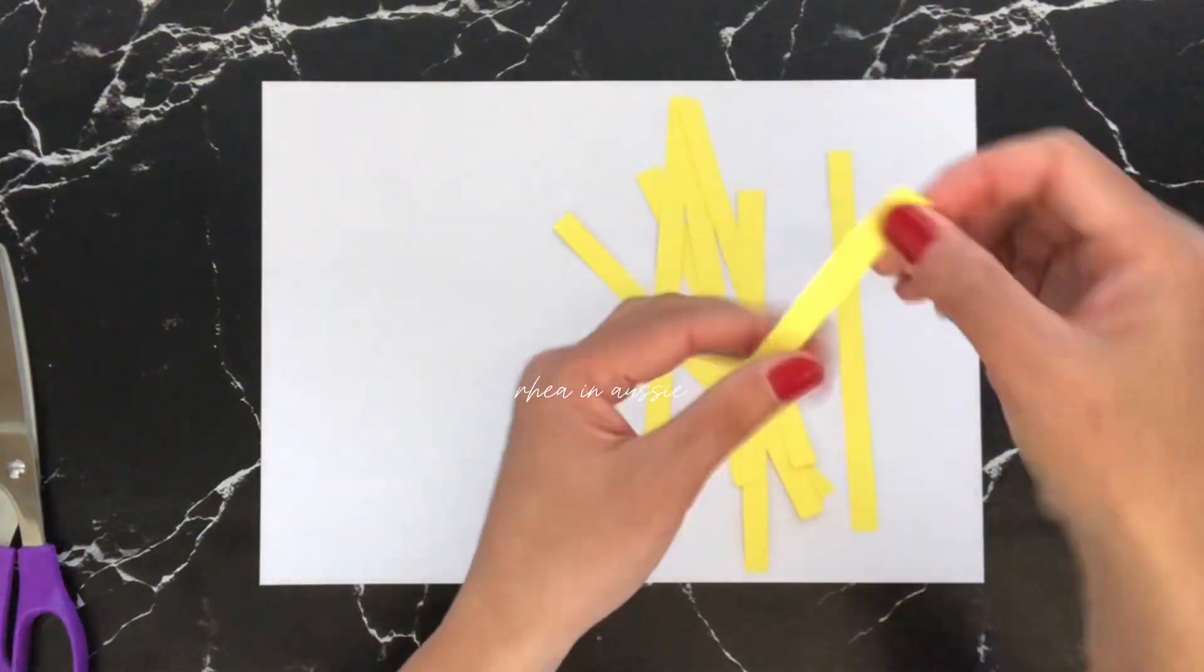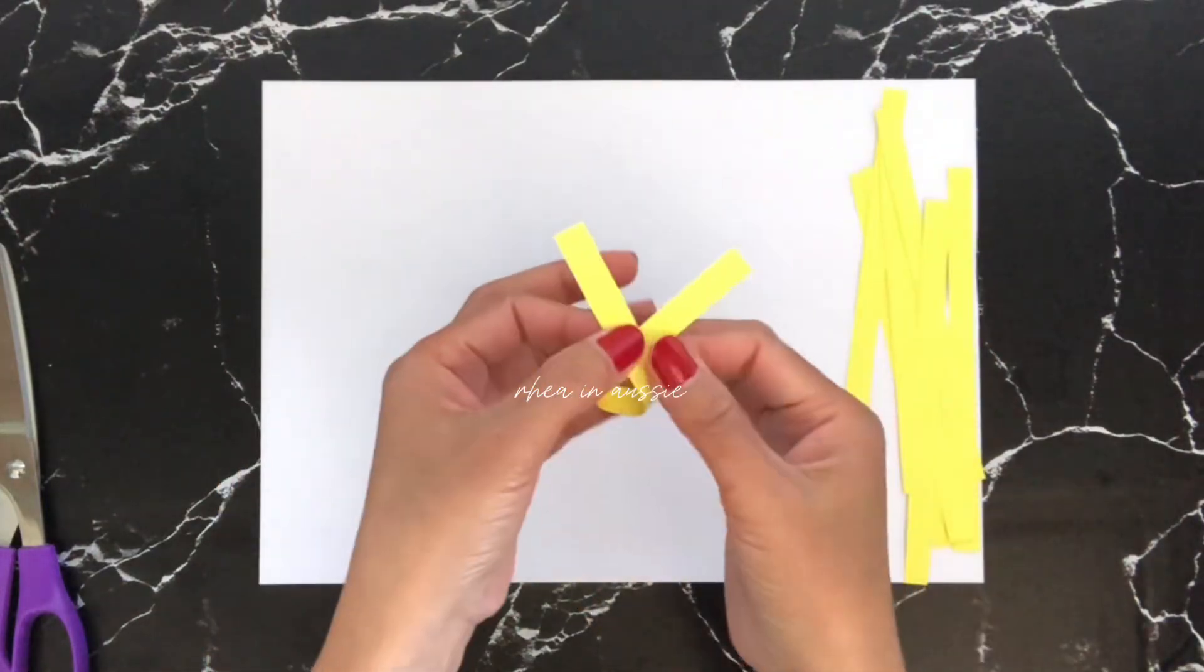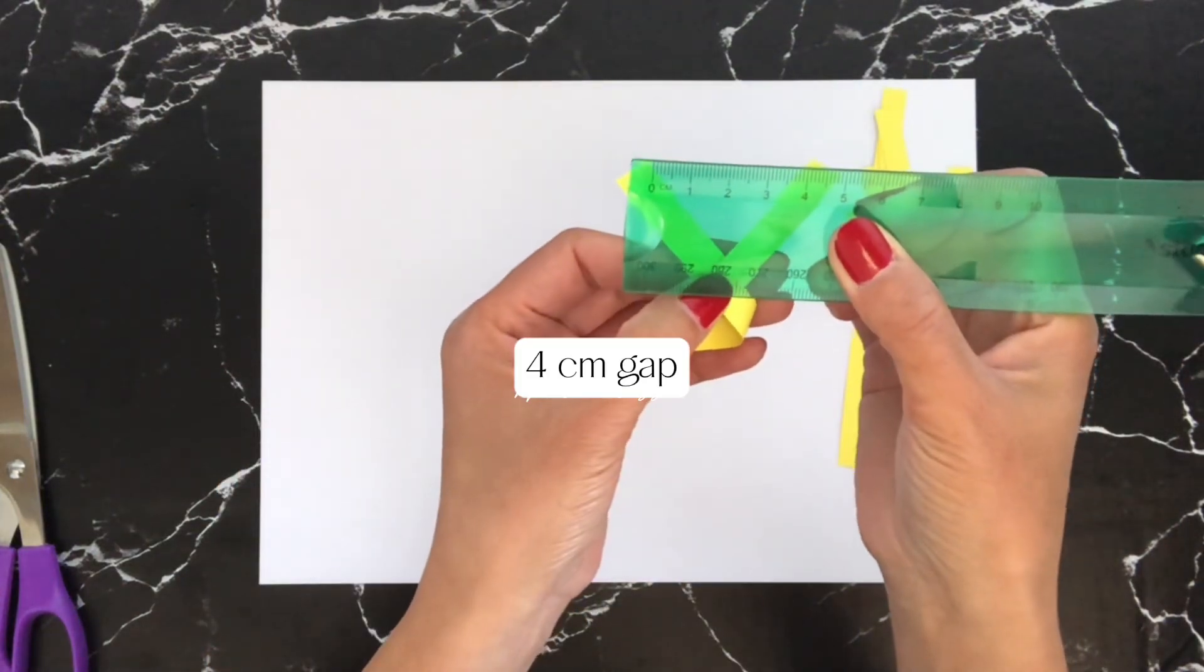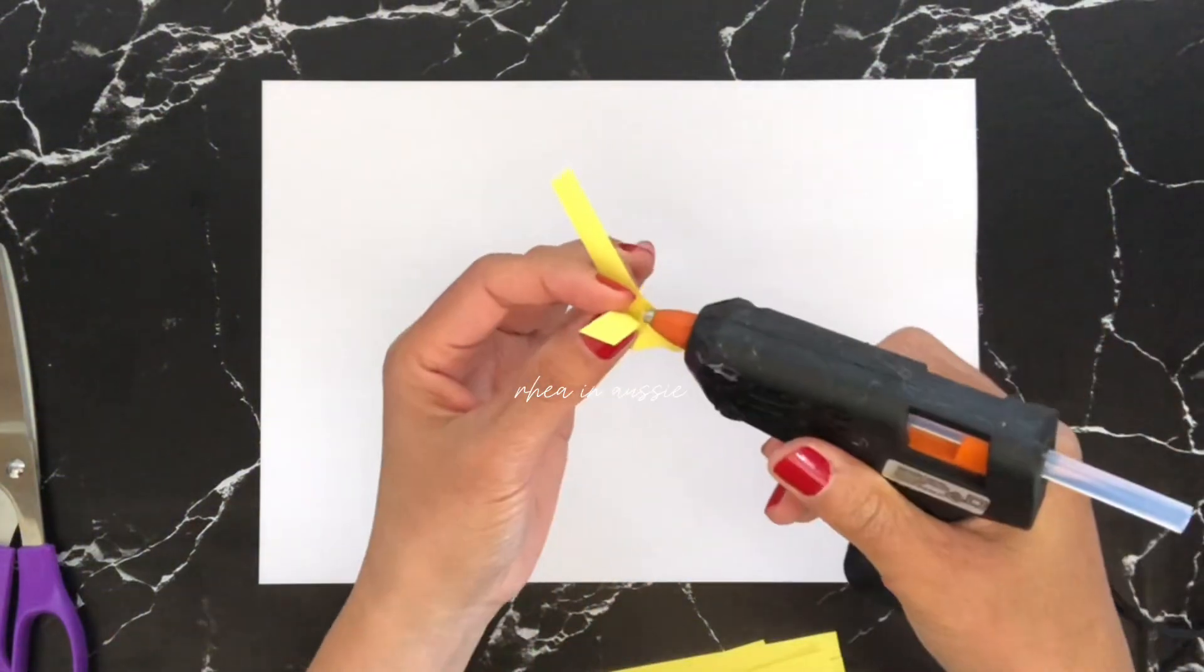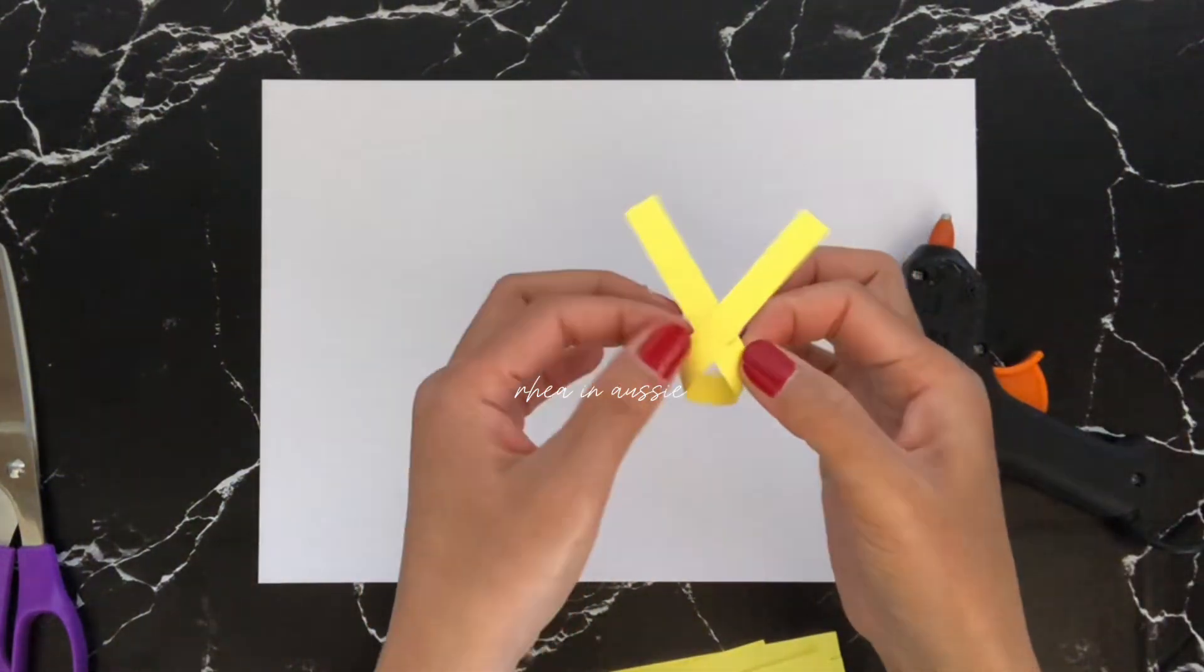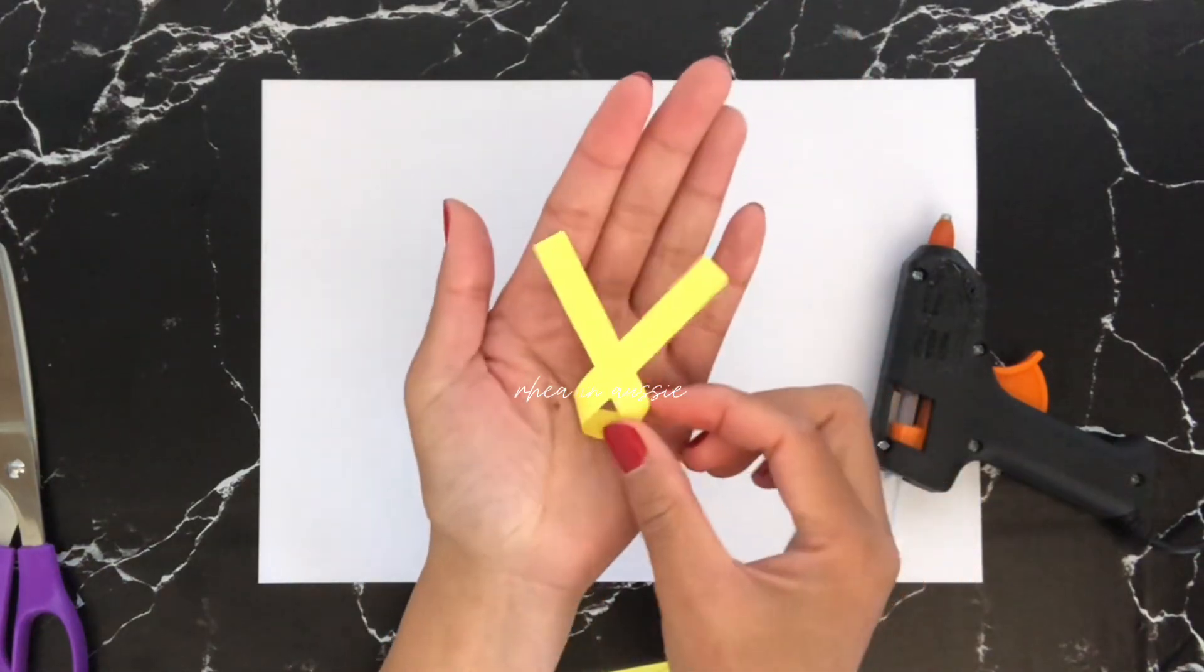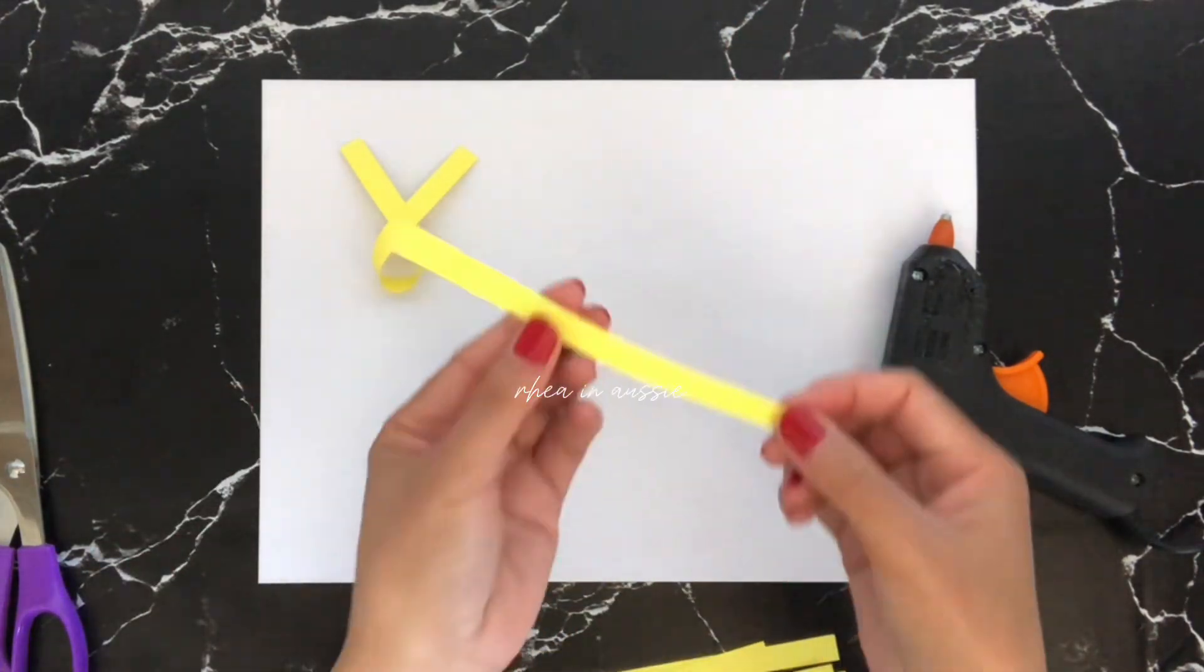And then we're going to shape each strip as shown. It will look like this. I'm going to make eight pieces of this one.